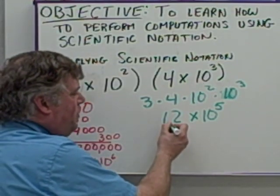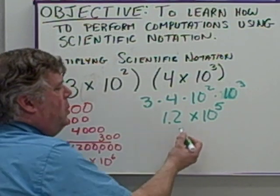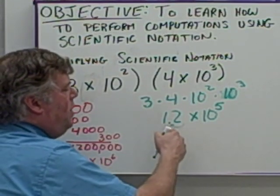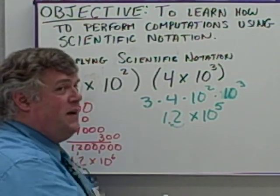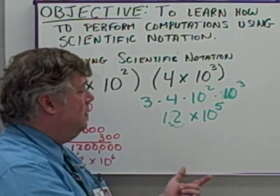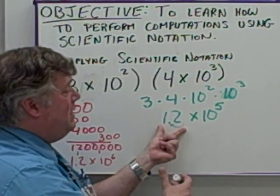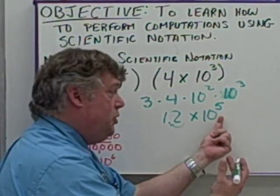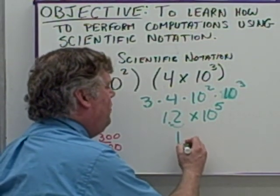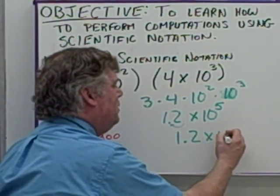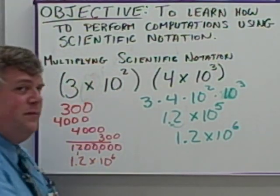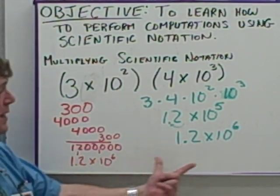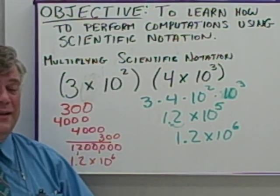Which means I have to move the decimal point here. I'm moving it from here over to here. If I'm moving it one place value, making this one place value smaller, since I make this one place value smaller, and I've got to keep the same value, I've got to make this one value of 10 larger. So this becomes 1.2 times 10 to the 6th. Same answer. 1.2 times 10 to the 6th.